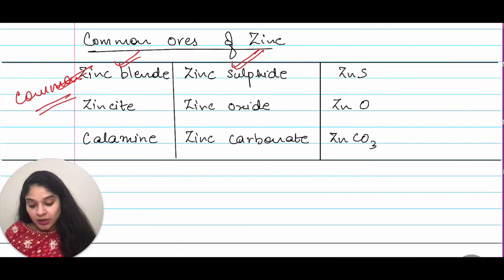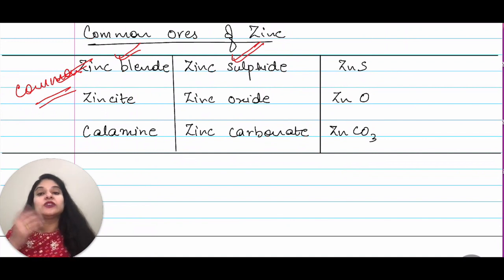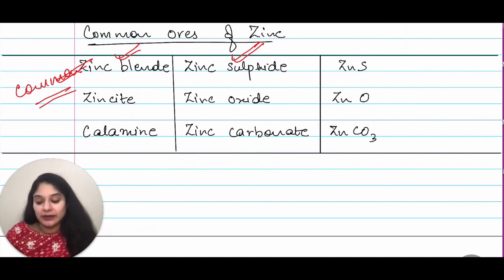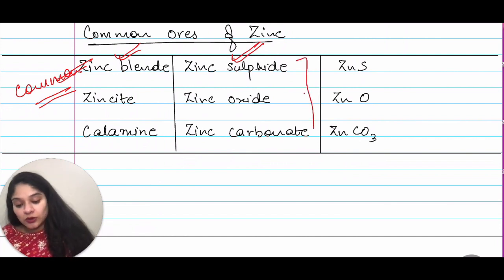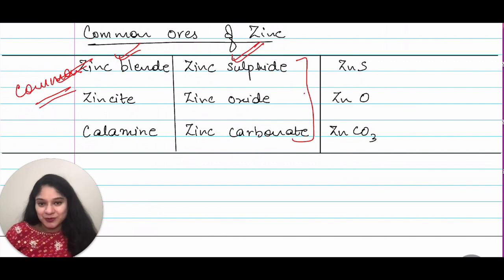For zinc, the most common ore is zinc blende, which is also zinc sulfide. Then you have zinc oxide and calamine. You need to remember these names — formulas are not required.